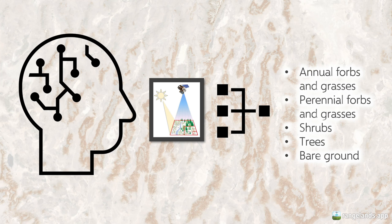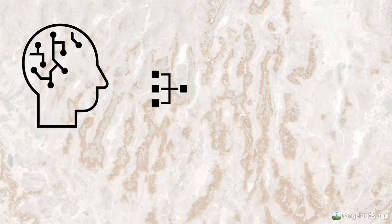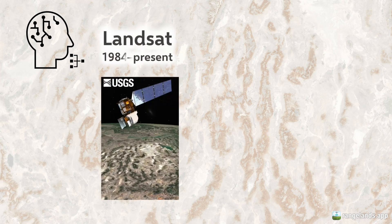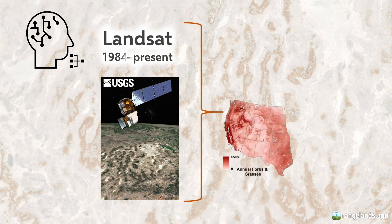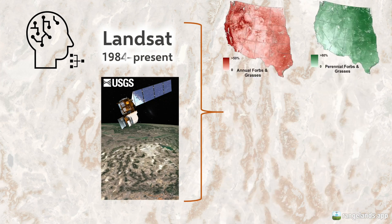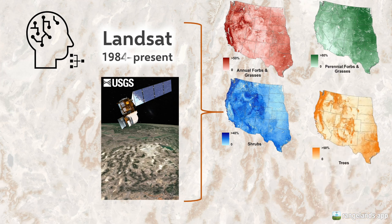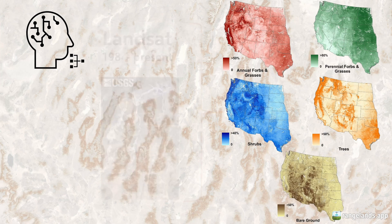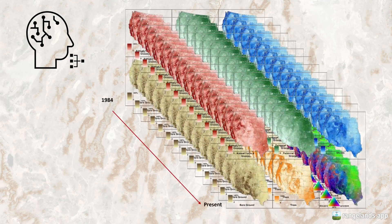We can then take that model and apply it to all of the Landsat data going back to 1984 — before we even had field data — to produce maps of vegetation cover: annual forbs and grasses, perennial forbs and grasses, shrubs, trees, and bare ground. And we don't just do this for one point in time; rather, we produce it for every year going back to 1984.